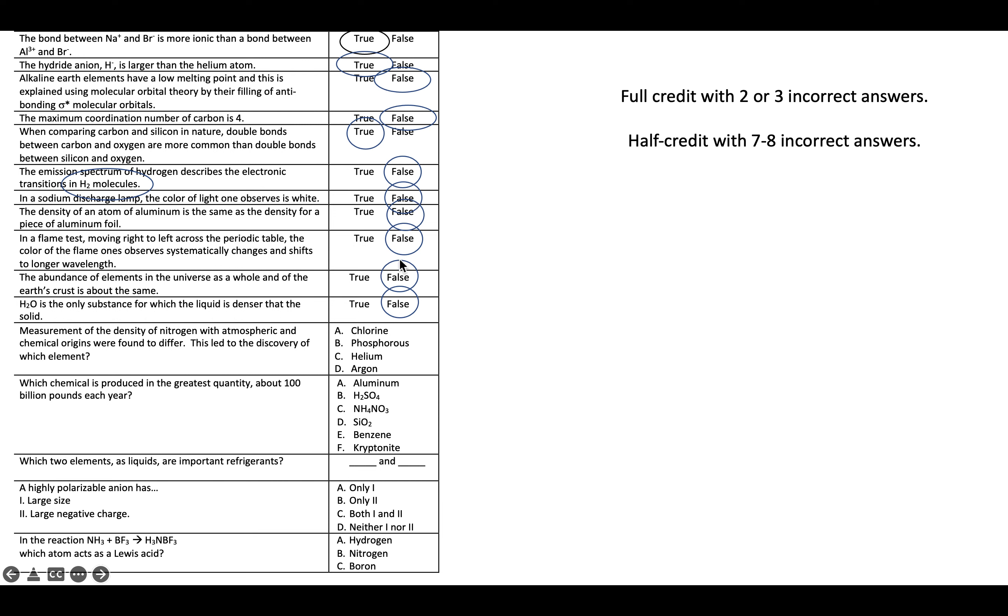Flame test is not a periodic trend. The abundance of elements in the universe, main two are hydrogen and helium. That's not true of the Earth's crust. We saw an example of a phase diagram for another substance besides H2O having this description. Measurement, density of nitrogen. That's how folks went on to discover argon.